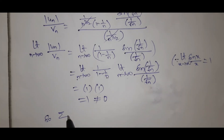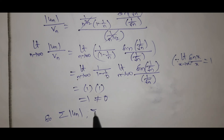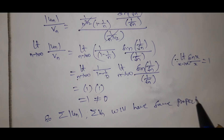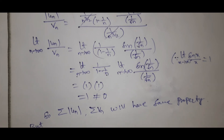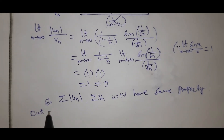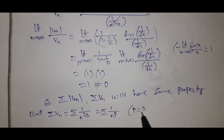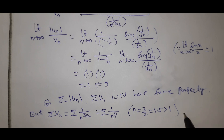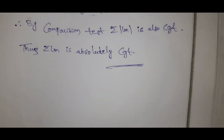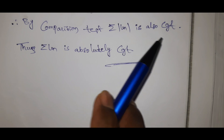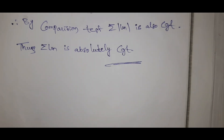So summation |u_n| and summation v_n have the same convergence property by the limit comparison test. Summation v_n = summation 1/n^(3/2), which is a p-series with p = 3/2 = 1.5, and since p > 1, it is convergent. Therefore, by the comparison test, summation |u_n| is also convergent. Thus the given series is absolutely convergent.